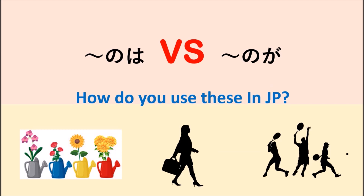So today we will explain how to use NOWA and NOGA. For NOWA, it is used when you want to take part of a sentence and make it the topic. But NOGA is different — we use NOGA when the thing being described involves an adjective.